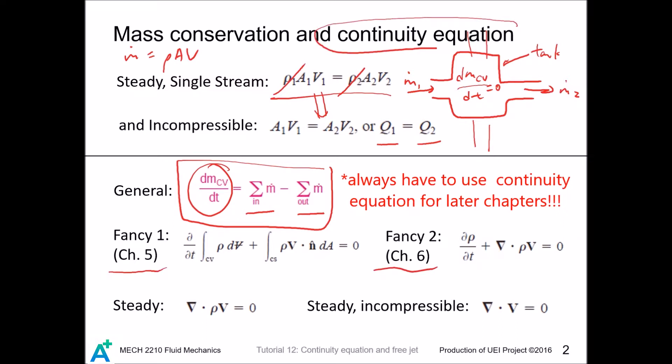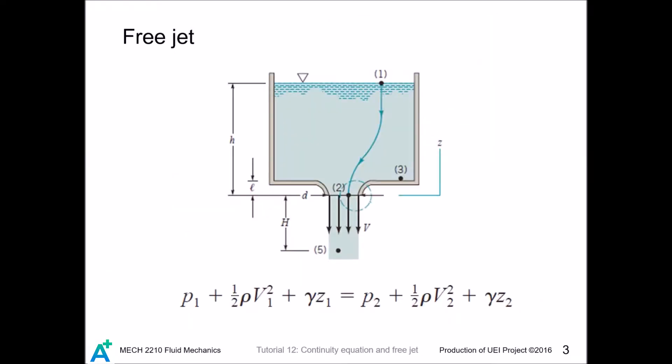We look at the example of free jets. Looking at points 1 and 2, since both points are exposed to atmosphere, both pressures go to zero. We set z2 as reference so this goes out and set this length as h. The tank is large so v1 = (a2*v2)/a1 and this ratio is really small, so we take this approximately equals zero. Solving for v2, we get v2 = √(2gh).